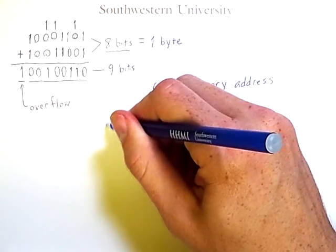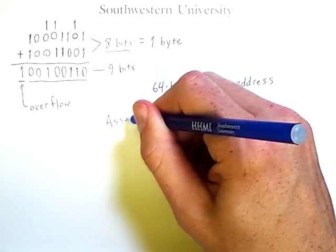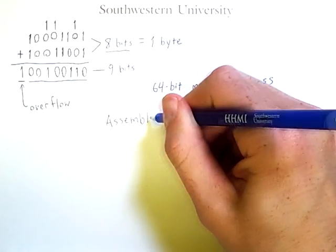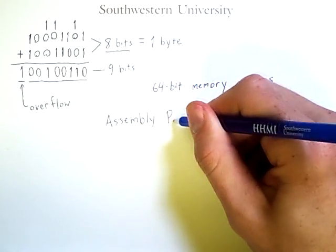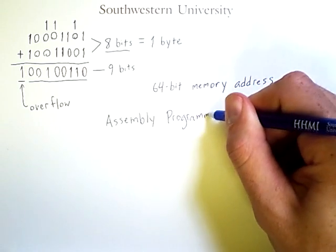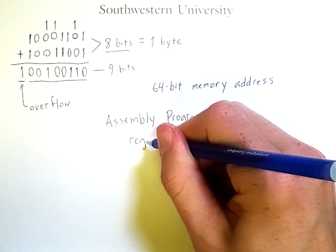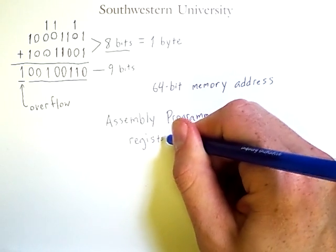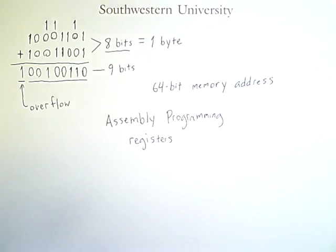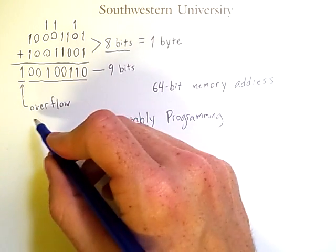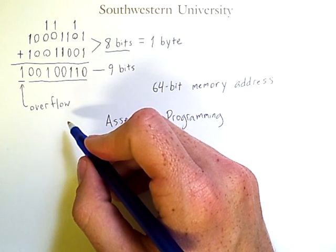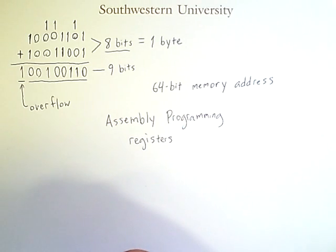Now, later in the course, when we become more familiar with assembly programming and also with the registers that are part of the CPU, we will see that the occurrence of overflow can actually be detected so that your programs can respond to this anomalous situation appropriately.